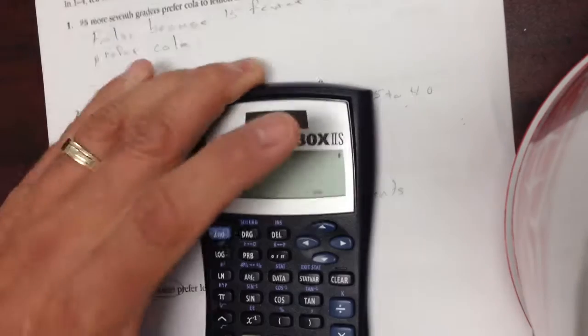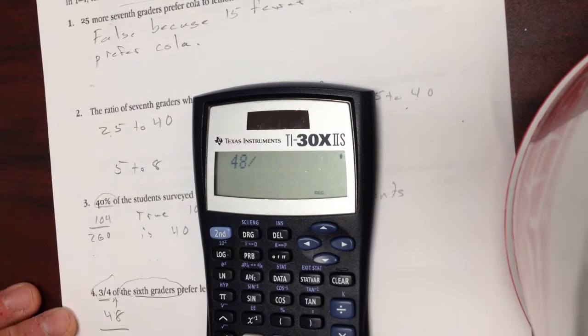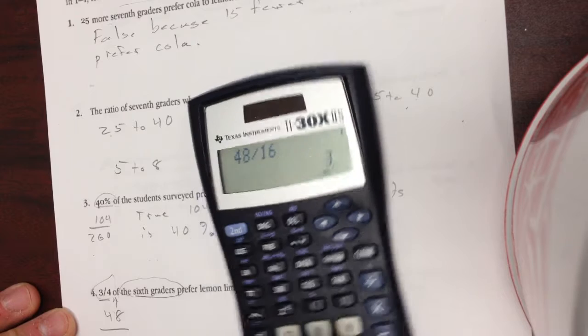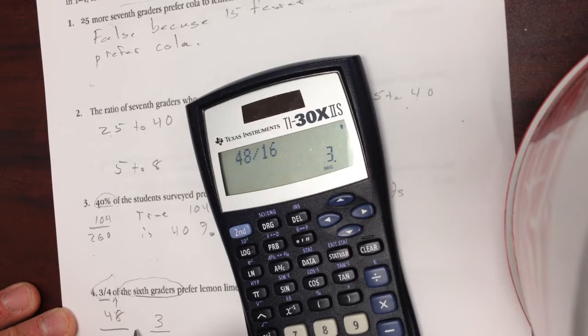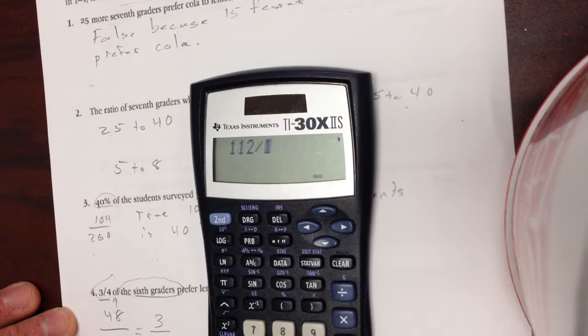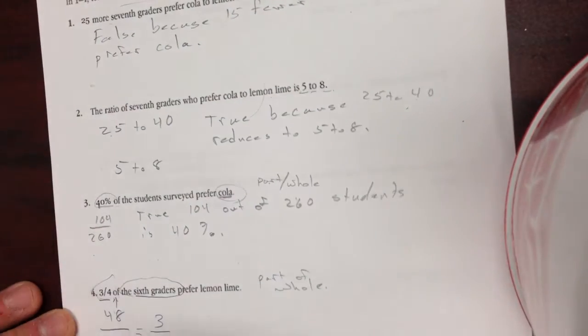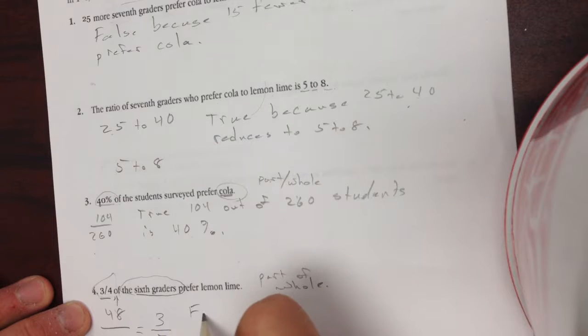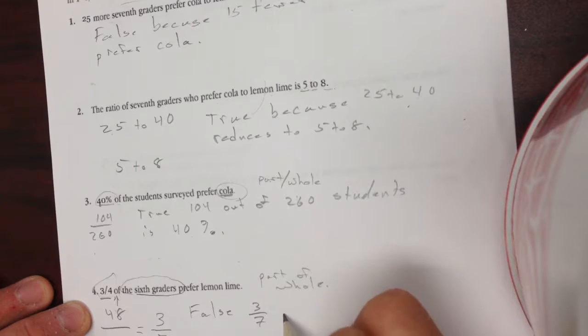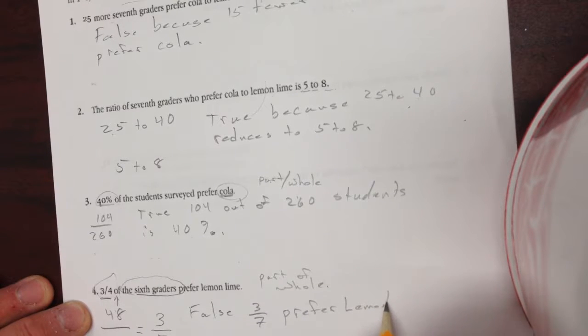16 does, I think. So I do 48 divided by 16. That's 3. And 112 divided by 16. That's 7. So the answer is false. 3-sevenths prefer lemon lime.